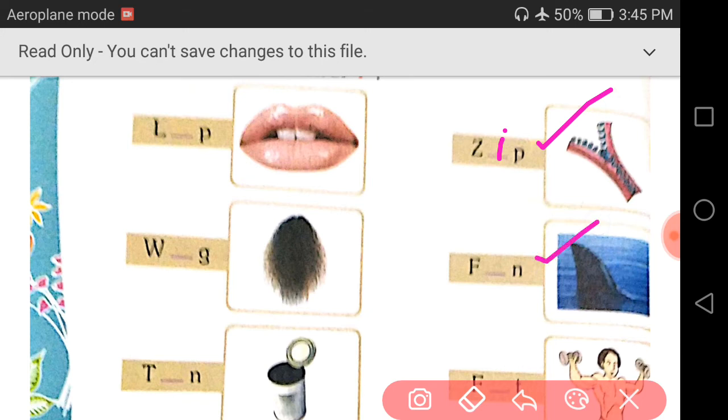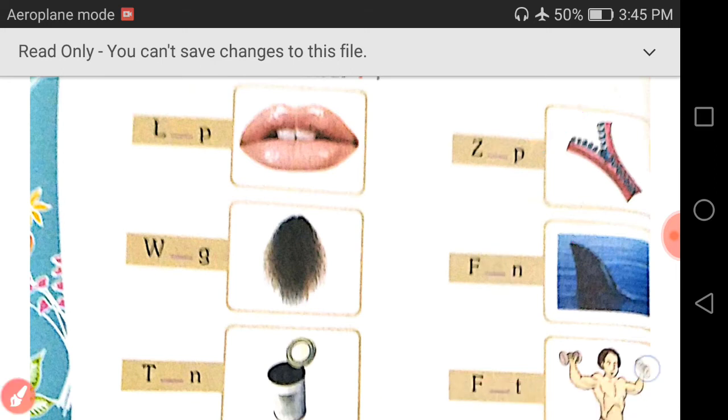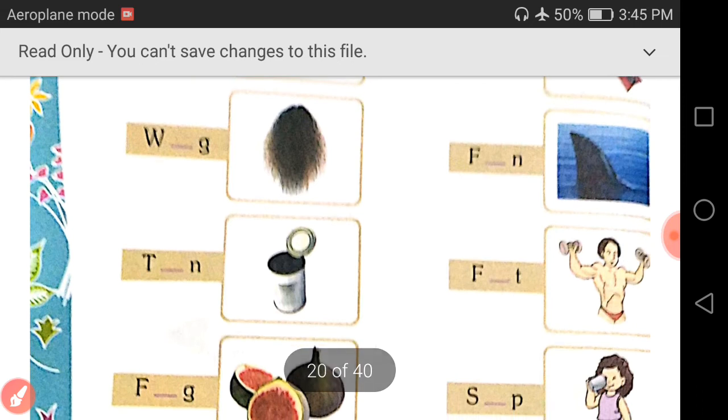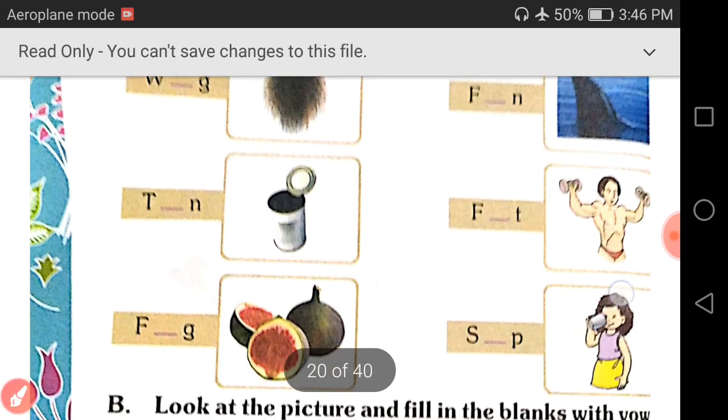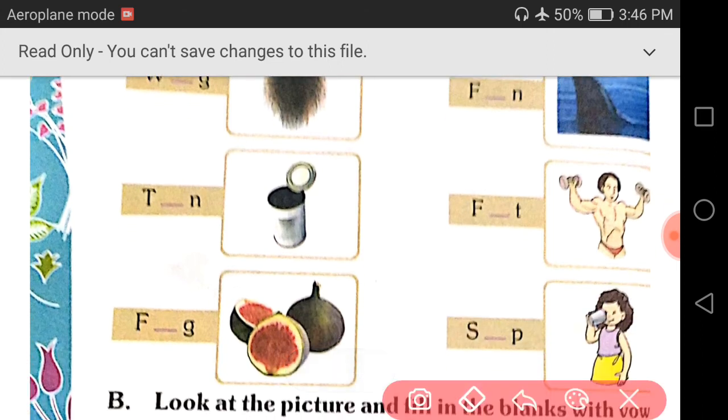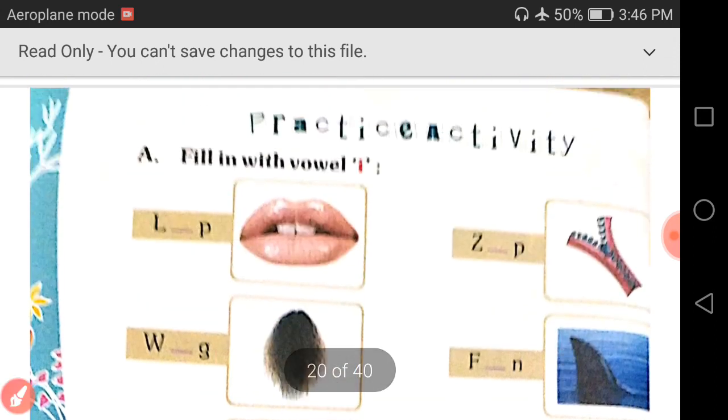Next, fit. F-I-T, fit. Write down I. F-I-T, fit. Then sip. S-I-P, sip. So we have completed our first activity, that is fill in with the vowel I.